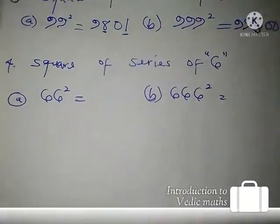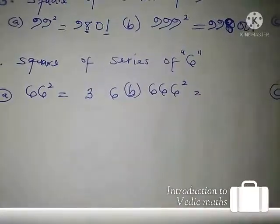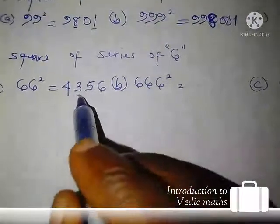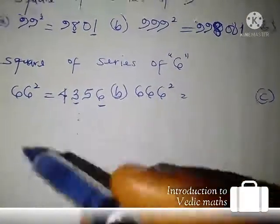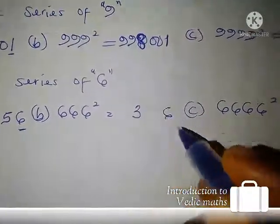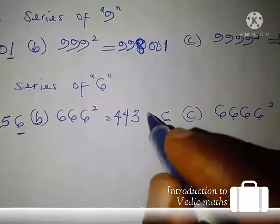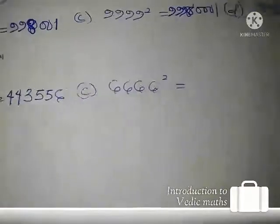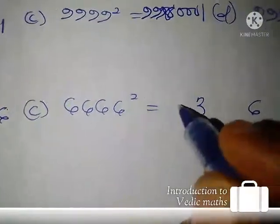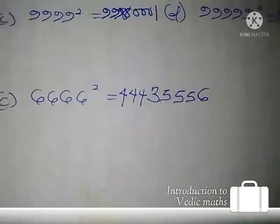Now let's move on to the series of sixes. For 66 squared, we get 4356. Note that 6 squared is 36, so three and six will be constant. You just introduce fours and fives. For 666 squared — three digits — three and six are constant, and we introduce two fours and two fives: 443556. For 6666 squared — four digits — three and six are constant, and we introduce three fours and three fives: 44435556.